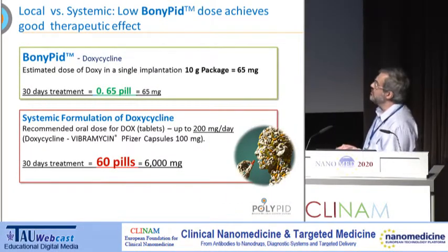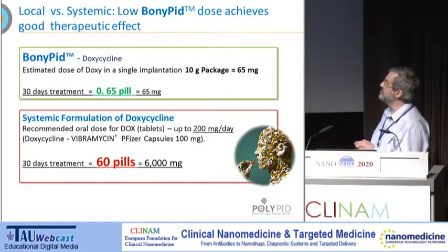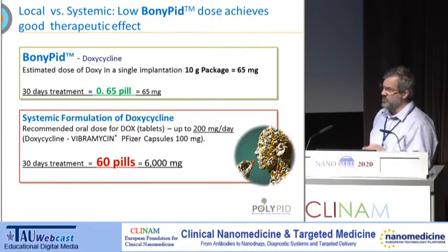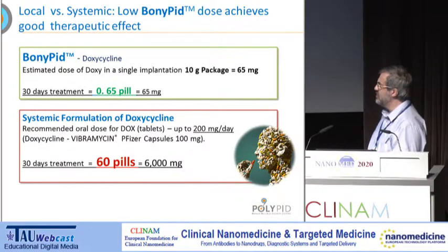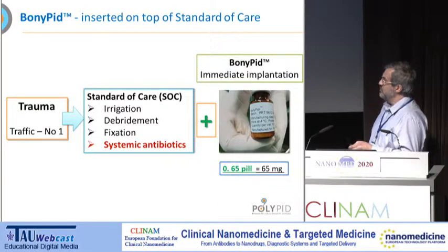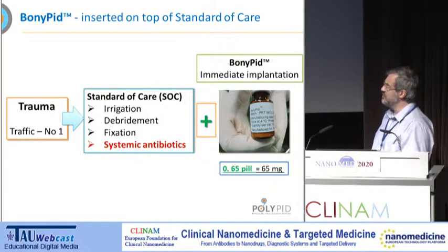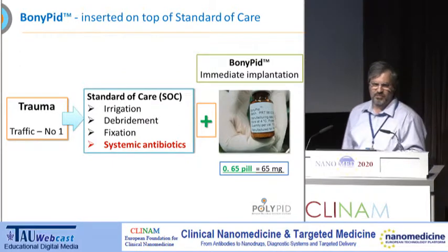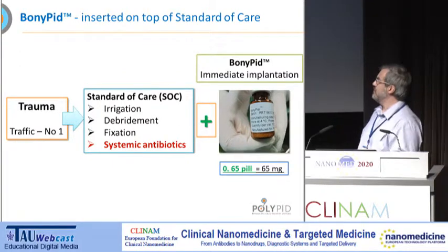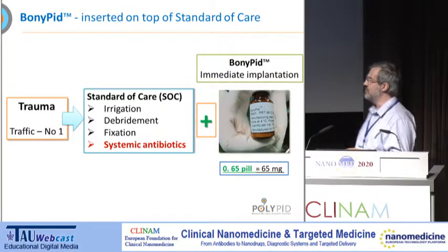What about the dose? About half a pill of antibiotics — that is all. One vial of Bonipid — 10 grams of granules — contains half a pill of antibiotics. Whereas for systemic treatment over 30 days, you would need 100 times more drug and still get very little into the bone. The protocol: trauma, then standard of care — irrigation, debridement, fixation, systemic antibiotic — plus one vial of Bonipid. The surgeon is allowed to use up to two vials, meaning roughly one pill's worth of antibiotics.